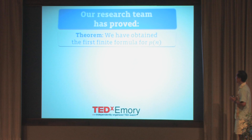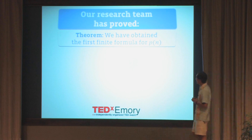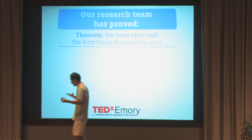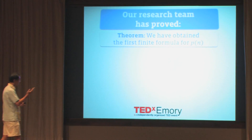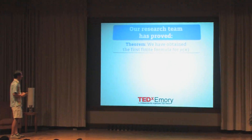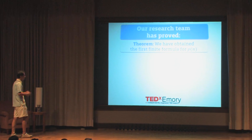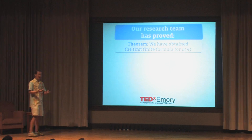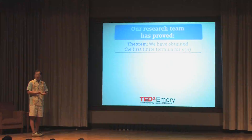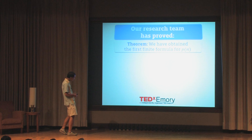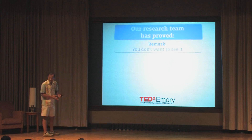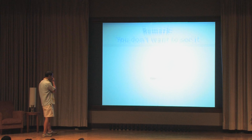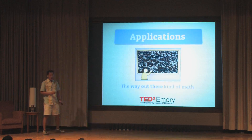So what have we done here at Emory? Our research team at Emory in the fall made quite a breakthrough. We found a way of calculating these numbers without having to add and count — a finite formula. It's been reported on in the current issue of Scientific American. The theorem is something like this: we have obtained for the first time a finite formula for P of n that turns the problem of calculating P of 200, P of a million, P of any number into a short, fairly short finite calculation. We're very pleased with this — it's a major breakthrough.